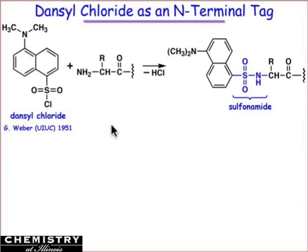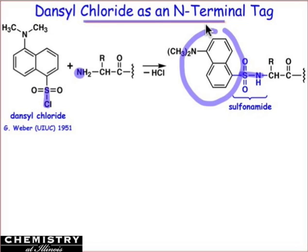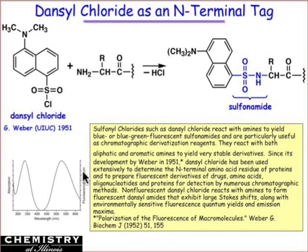Today, more common than Sanger's reagent is dansyl chloride. Dansyl chloride has a sulfonyl chloride group, and it reacts with amino groups by an addition-elimination process to make the sulfonamide. The sulfonamide is also very resistant to hydrolysis, and once dansyl chloride forms a sulfonamide, it is strongly fluorescent — giving a unique signature that doesn't appear in any of the other amino acids.